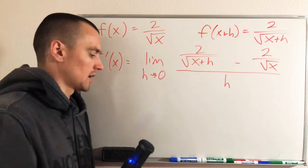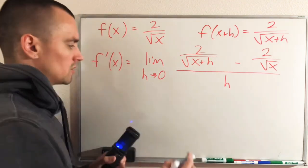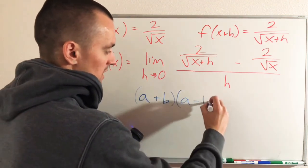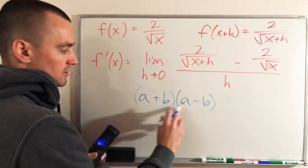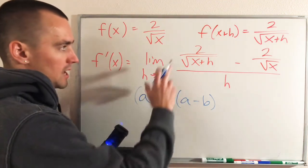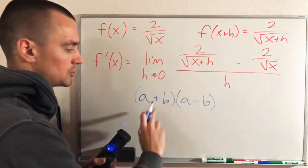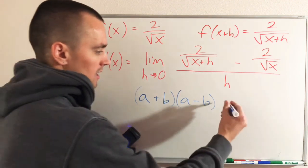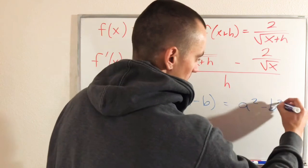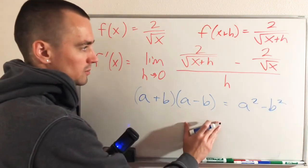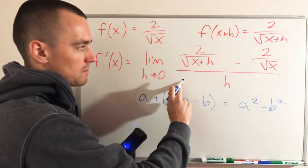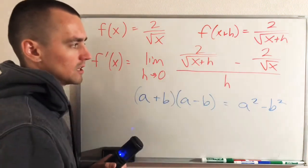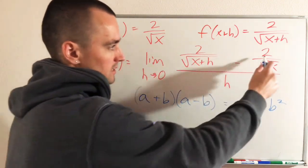The reason why we do that builds off of difference of squares. Difference of squares says if we have (a+b)(a-b), that's going to multiply out to a² minus b². In this case, you could imagine a as 2 divided by the square root of x+h and b as 2 over the square root of x. So if you have (a+b)(a-b), that's going to multiply out to a² minus b². So applying that same principle, if we multiply both the top and the bottom of this fraction by 2 over the square root of x+h plus 2 over the square root of x, that's going to leave us with this term squared minus this term squared.